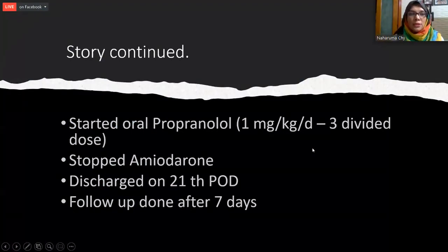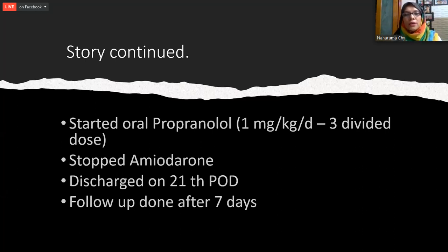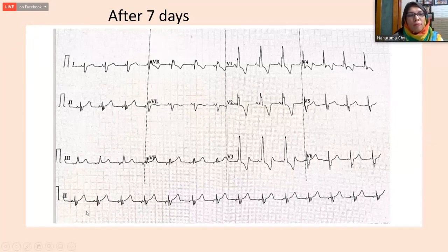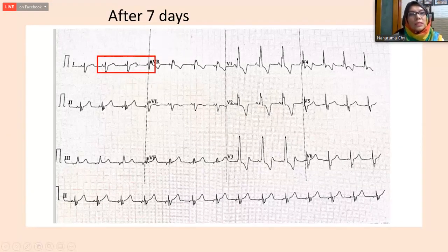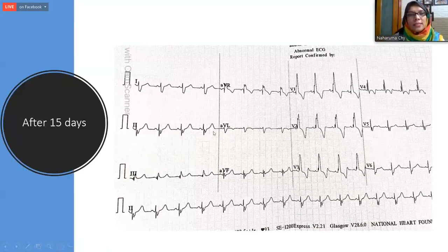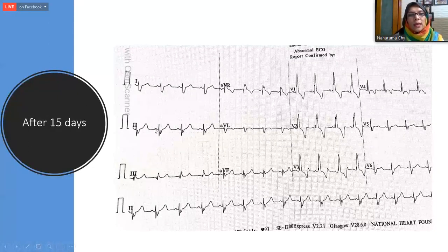Since the patient was hemodynamically well, we stopped amiodarone and started oral propafenone at 1 mg/kg/day in three divided doses. We counselled the patient and discharged with follow-up at seven days. On the seventh day, the rate was 100 and rhythm was regular. In lead 1 there was sinus rhythm, but in lead 2 the P morphology was different, and in leads 3 and AVF there was a low atrial focus. After 15 days, the rhythm was regular with P waves coming from the sinus node — sinus rhythm restored.